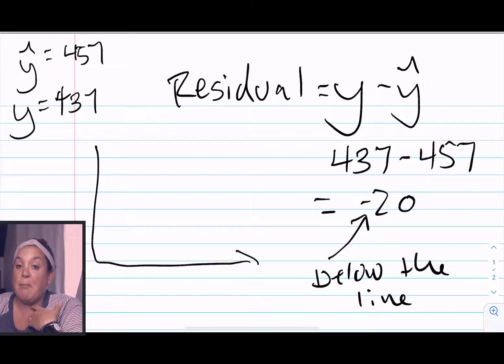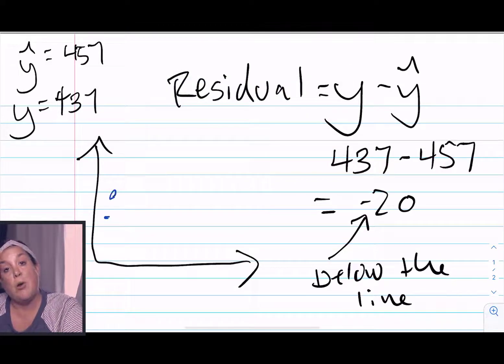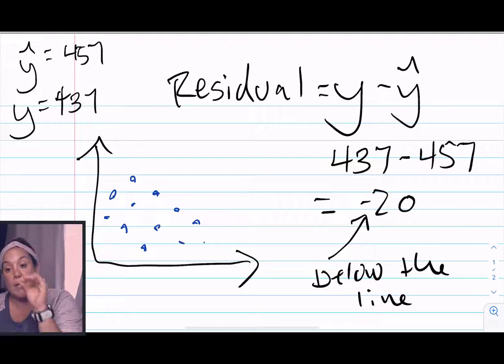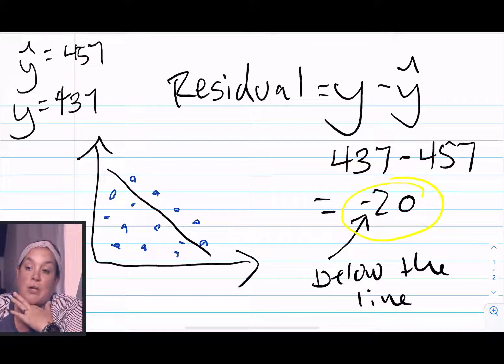So because my residual came out to be negative 20, that means that I was below that regression line, and that means that my point, that blue dot, is below the line that was created with that regression equation.